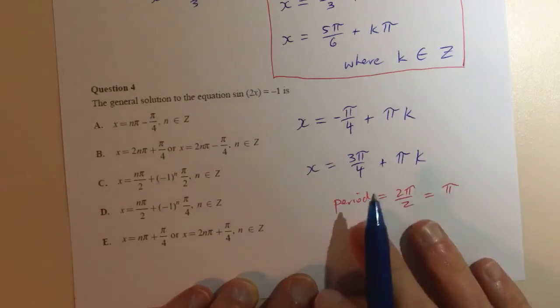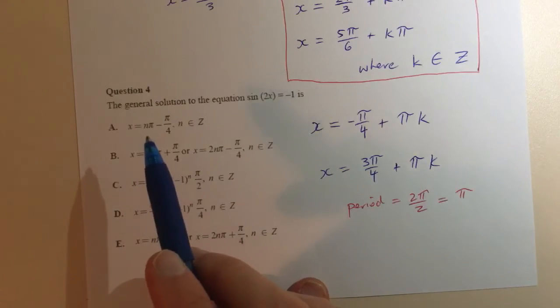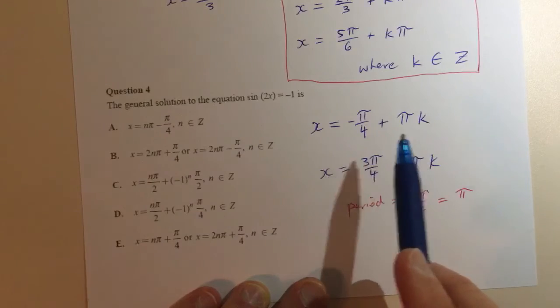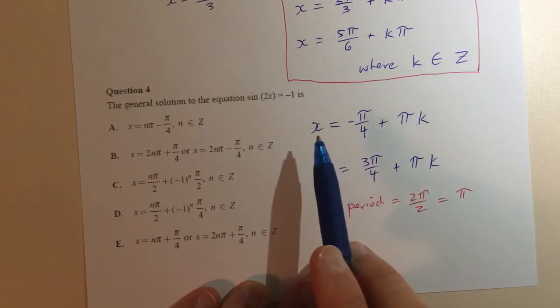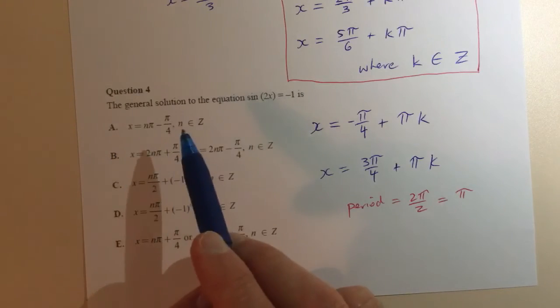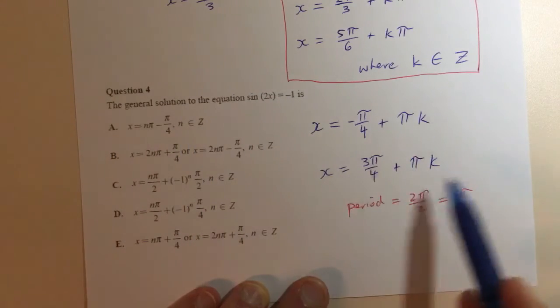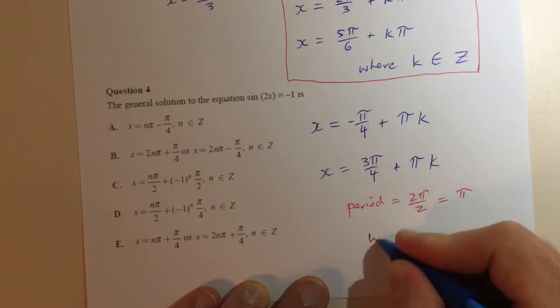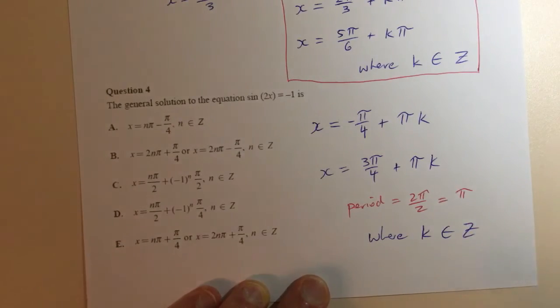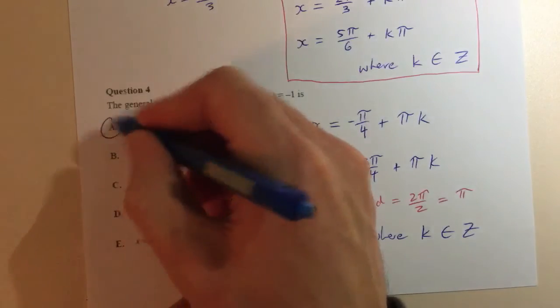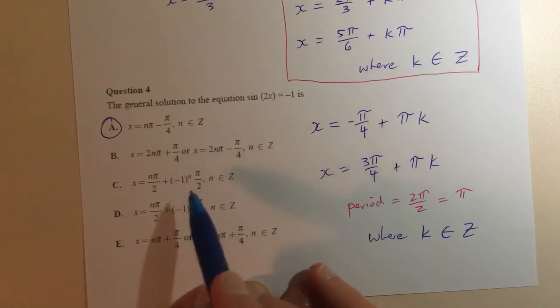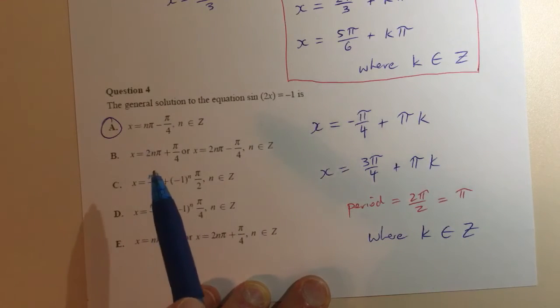So what we could do is just look through the options and see which one at least has one of them in it. First option, option A, x = nπ - π/4. Well I copied it from the calculator slightly differently but you can see that my first solution here matches up exactly to that one, right, where n is an element of ℤ. And if this is a short answer question I should have written where k is an element of ℤ. So the question is use n instead of k, that's all right, it's representing the same thing. So A is the correct option. You would maybe just double check and make sure that none of the other options look correct, but you can actually see if you read through them all carefully.